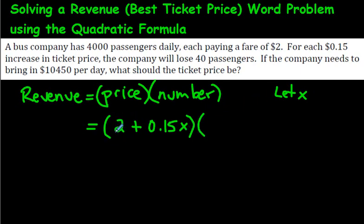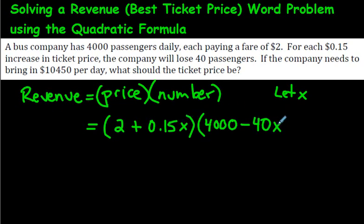When they sell the ticket for $2, they get 4,000 daily passengers. But every time they increase the price by $0.15, they lose 40 passengers. So the number of passengers is 4,000 minus 40x. If the price is increased once, they lose 40 passengers; if twice, they lose 80. So you put X into both expressions. The revenue we're looking for — price times passengers — should equal $10,450.